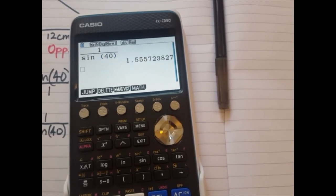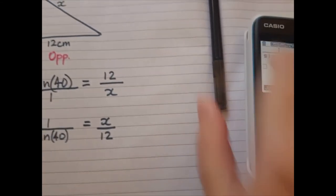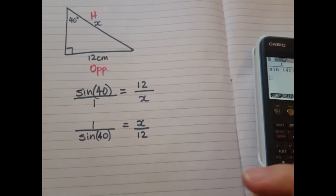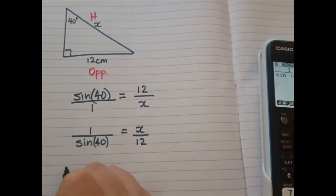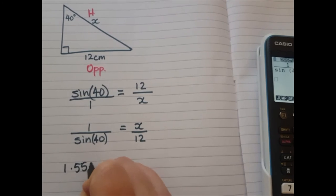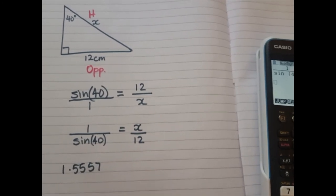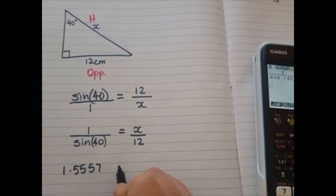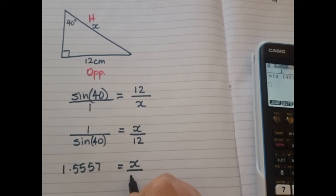So that's my decimal number. Let me write it down. Okay. And this is what equals x divided by 12.